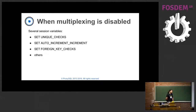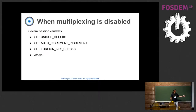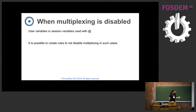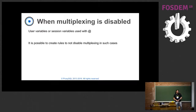There are a lot of session variables that, when they are set, ProxySQL automatically disables multiplexing. Here I listed some of them, like SET UNIQUE_CHECKS, SET AUTO_INCREMENT_INCREMENT, FOREIGN_KEY_CHECKS, and so on - multiplexing is automatically disabled. By default, it's also disabled for every query that uses the '@' sign normally used for user variables or session variables, no matter if you are setting or reading it.